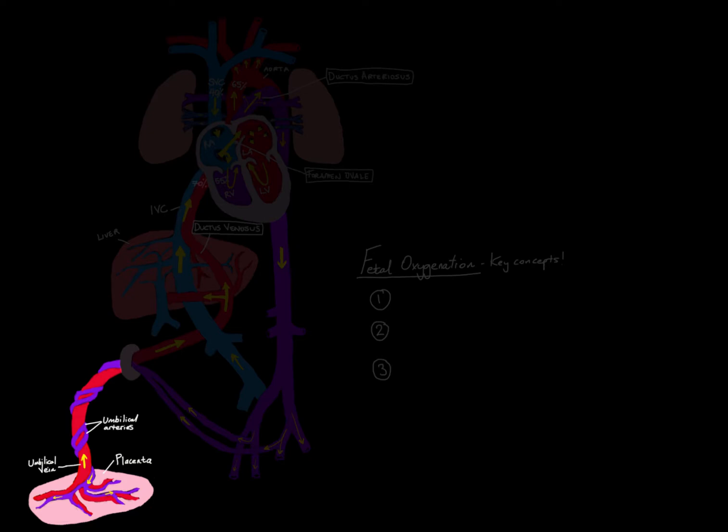Therefore, the fetus needs a source of oxygen for the blood, and it needs a way of clearing the metabolic waste products of its development, such as carbon dioxide and other waste products, out of its system. That's really where the placenta and the fetal circulation start to come in.